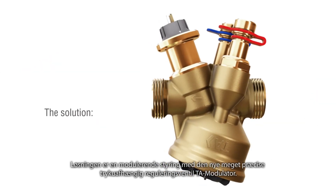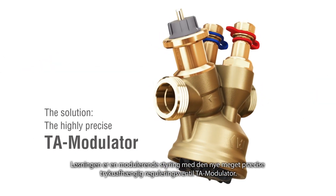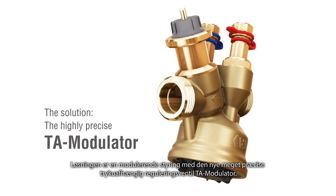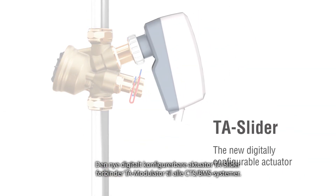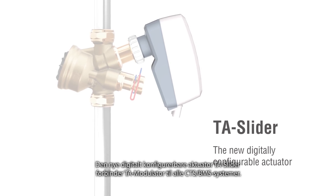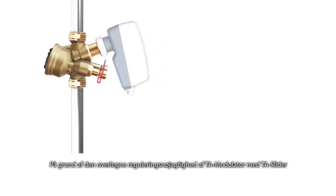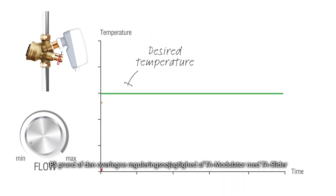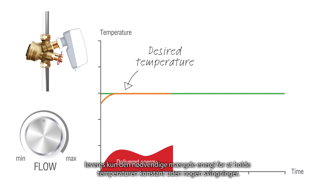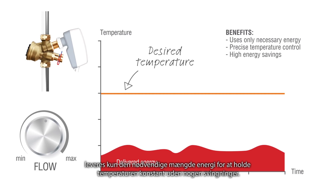The solution is modulating control with the new highly precise pressure independent control valve, TA modulator. The new digitally configurable actuator TA slider connects TA modulator to all building automation systems. Due to the superior accuracy of TA modulator with TA slider, only the necessary amount of energy is delivered to keep the temperature constant without any oscillations.